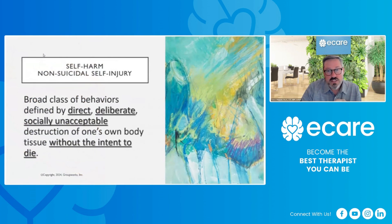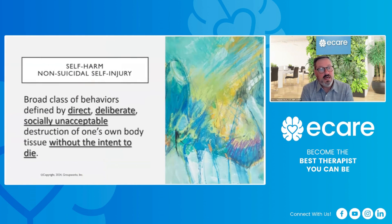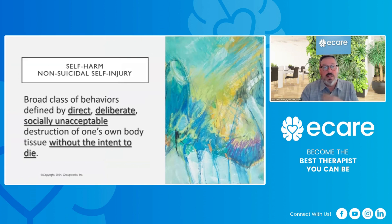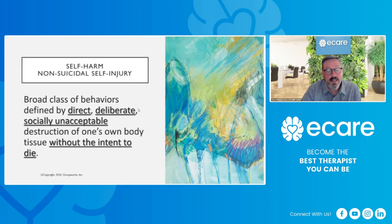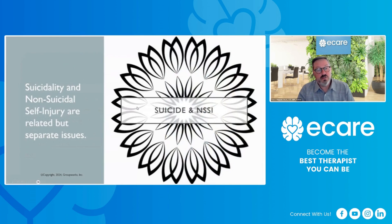With self-harm, or non-suicidal self-injury — as we often call it, NSSI — it's defined as a broad class of behaviors defined by direct, deliberate, socially unacceptable destruction of one's own body tissue without the intent to die. People can have concurrent suicidal ideation while engaging in self-harm, but the intent behind the behavior at any given time when engaging in non-suicidal self-injury is not to end their life. Suicide, suicidality, and non-suicidal self-injury are separate but related issues.